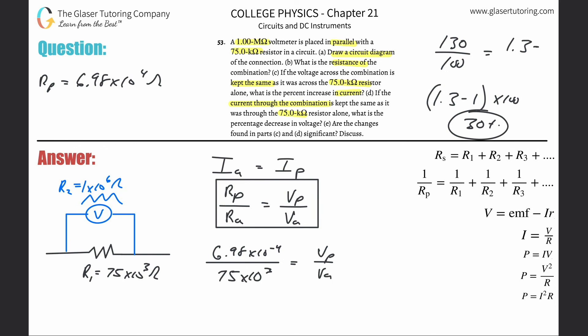So 6.98 times 10 to the fourth, let me use that exact value from before, and then divide it then by the 75 times 10 to the third. So I'm going to get, okay, so this is 0.9302. This is VP over now VA. All right. Now this represents the fractional change.